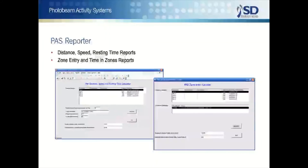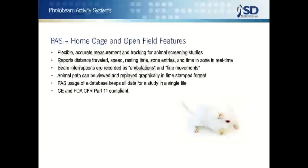PAS Reporter provides qualitative data on the subject's locomotor patterns, like distance traveled, speed, resting time, zone entries, and time in zones.